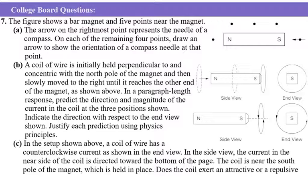This is one of the College Board questions posted for quizzes. Try to pause in between and make sure that you can answer the questions before you see my explanation. The first problem says the figure shows a bar magnet and five points near the magnet. The arrow at the rightmost point represents the needle of a compass. On each of the remaining four points, draw an arrow to show the orientation of the compass needle at that point.